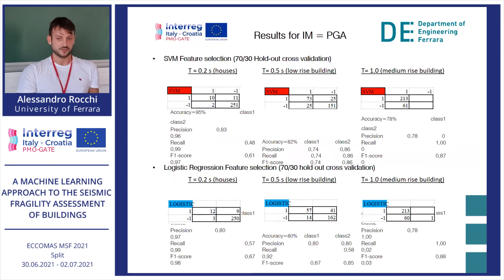Here are some of the results. For example, we have the intensity measure PGA. For it, we have been using several supervised algorithms: the support vector machine (SVM), logistic regression, and fine tree. Here you can see, for all of them, results for the short period — the houses — the medium period at 0.5 seconds, and the higher period at 1.0 second.